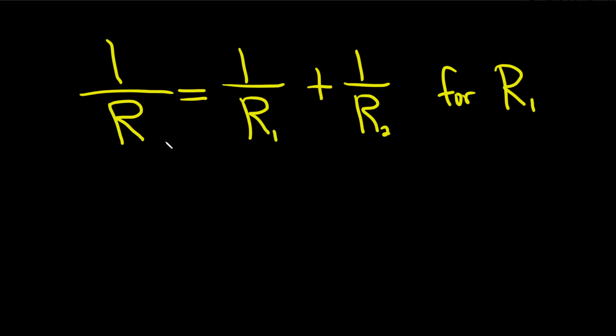We have all these other fractions, so let's start by getting rid of all of the fractions. To get rid of the R, we have to multiply by R. To get rid of R1, we multiply by R1. To get rid of R2, we can multiply by R2. So to get rid of all three, we can multiply by R, R1, R2.